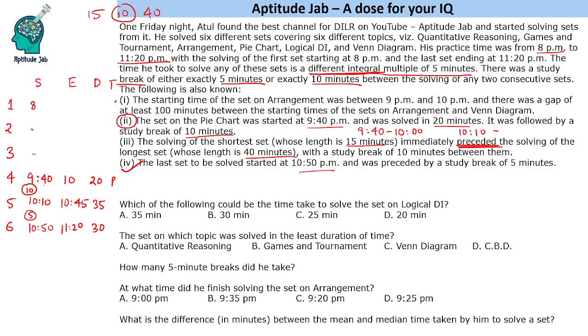The next information that is going to be handy is the first one. It says that the starting time of the set on arrangement was between 9:00 PM and 10:00 PM. And there was a gap of at least 100 minutes between the starting times of the sets on arrangement and Venn diagram. Now there are two possibilities. That Venn diagram comes first and then followed by arrangement, and another possibility is arrangement comes first and then Venn diagram.